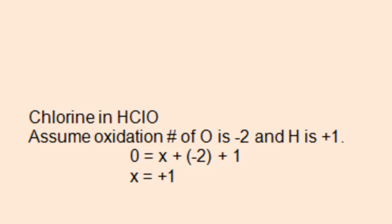We have one hydrogen and one oxygen, negative two, positive one, plus chlorine, which is the unknown, x. Doing the algebra, we find that x is positive one, so the oxidation number of chlorine, in this case, is positive one.